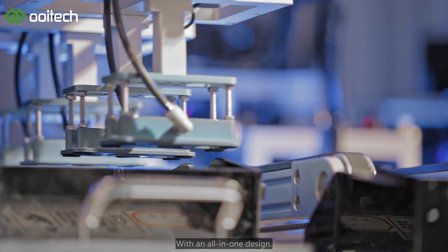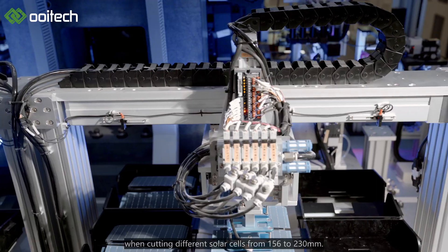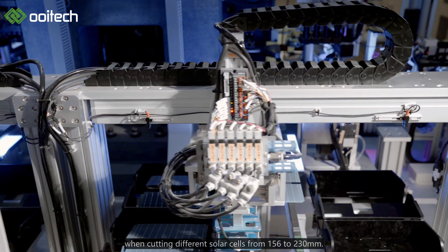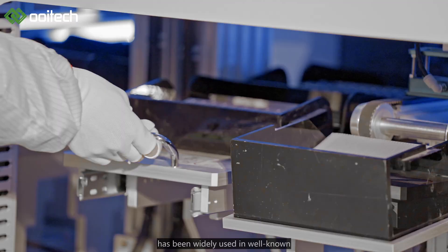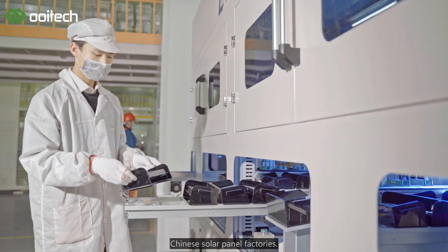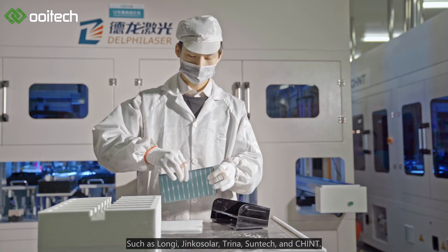With an all-in-one design, it needs no accessory replacement when cutting different solar cells from 156 to 230mm. The Oeditech Waterless Laser NDC machine has been widely used in well-known Chinese solar panel factories such as Longi, JinkoSolar, Trina, Suntech, and JA Solar.